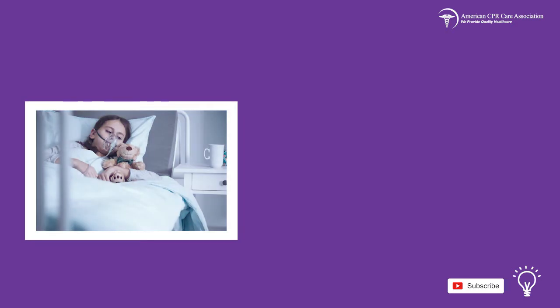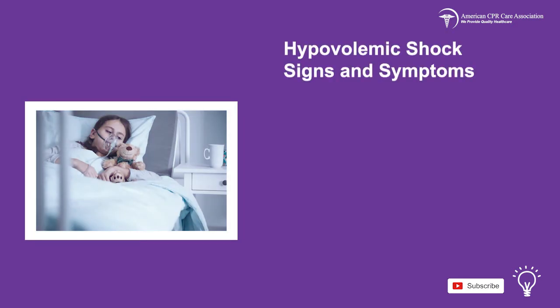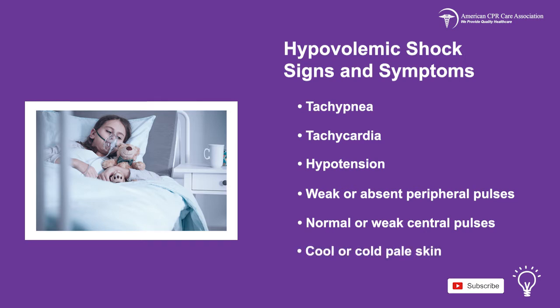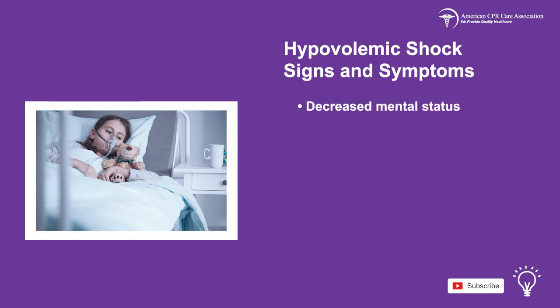Children experiencing hypovolemic shock may show the following signs: tachypnea, tachycardia, hypotension, weak or absent peripheral pulses, normal or weak central pulses, cool or cold pale skin, decreased mental status, low urine output, or delayed capillary refill.